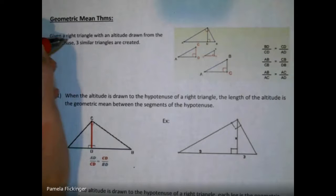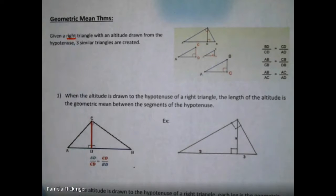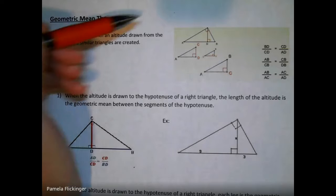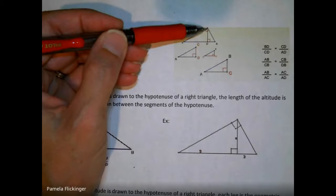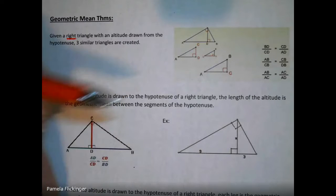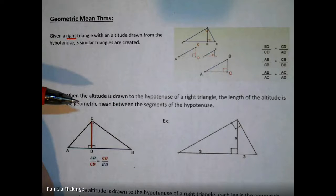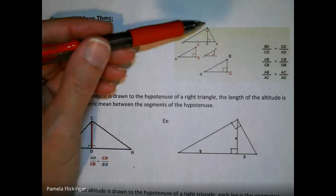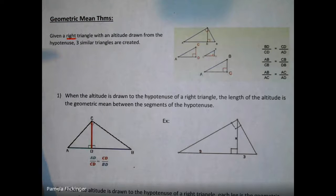Here are the basic rules. First, we have to be given a right triangle — this only works with right triangles. In the right triangle we're going to draw an altitude down to the hypotenuse, going from the right angle down to the hypotenuse. This doesn't work if you draw an altitude from the other angles, because those are actually our legs.